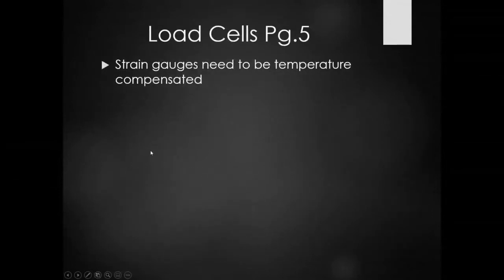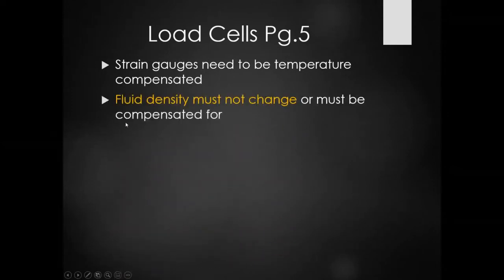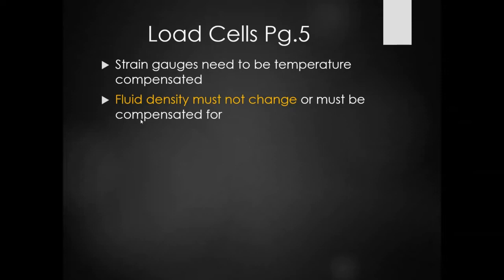Strain gauges, like most resistance-type devices, need to be temperature compensated. The fluid density must not change — this is pretty critical. If we're filling a vessel and the fluid becomes lighter, the level would have to be higher to make the same reading, and if the density were higher, the level would have to be lower. So we have to be sure the density of the process medium doesn't change, or it's compensated for, whether using a density transmitter in conjunction or otherwise.